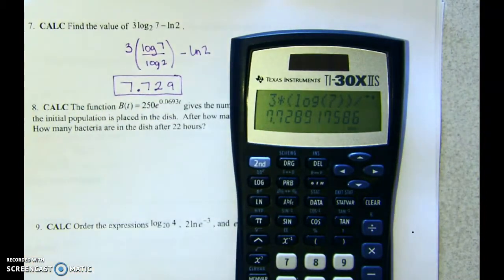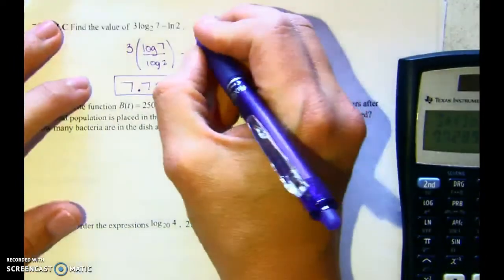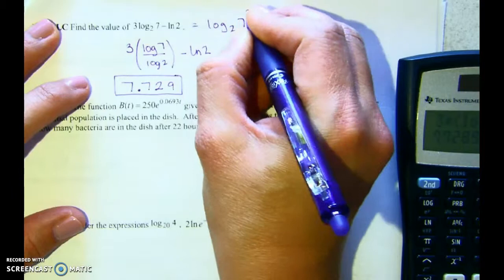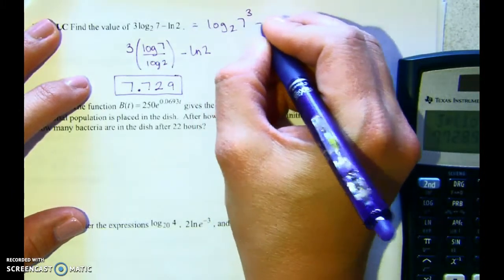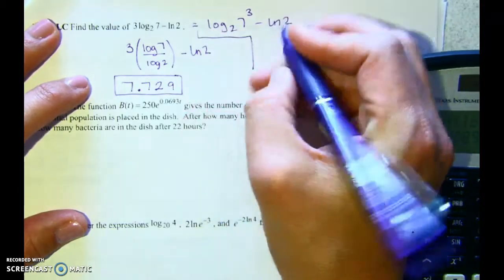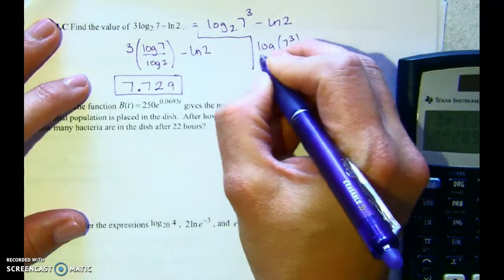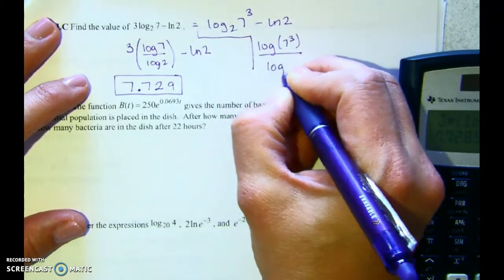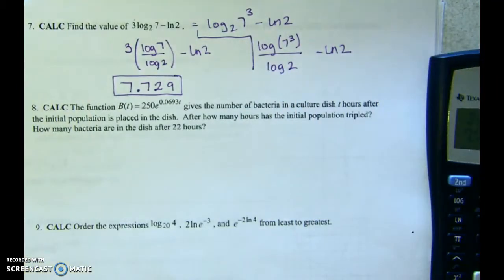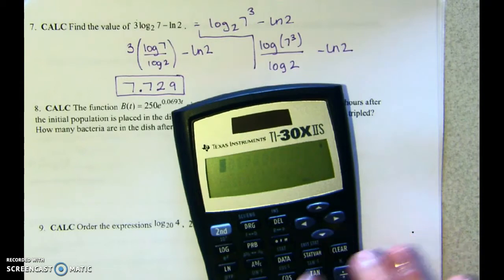Another way to do it is to move that power of 3 up to the exponent first, making it log(7³). We're supposed to know 7³ — it came up on the first quiz. It's 343, not 729.